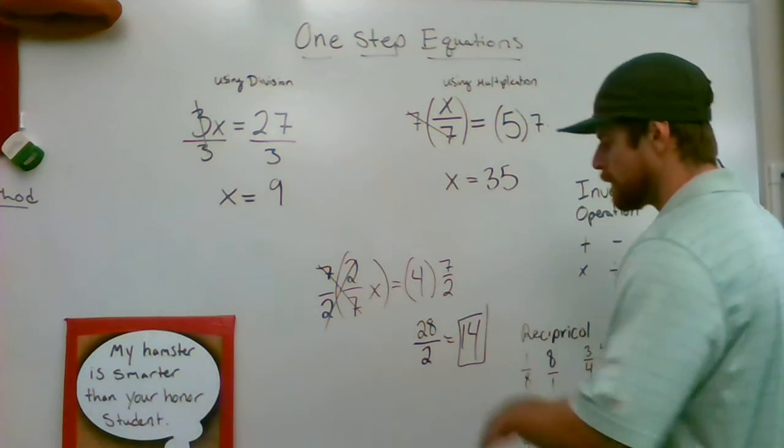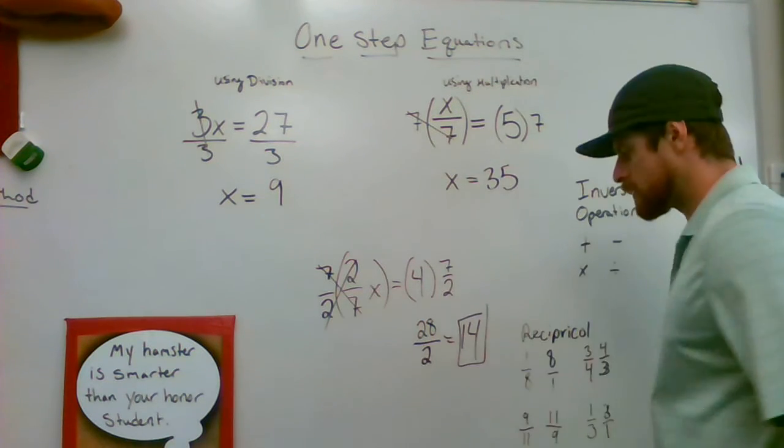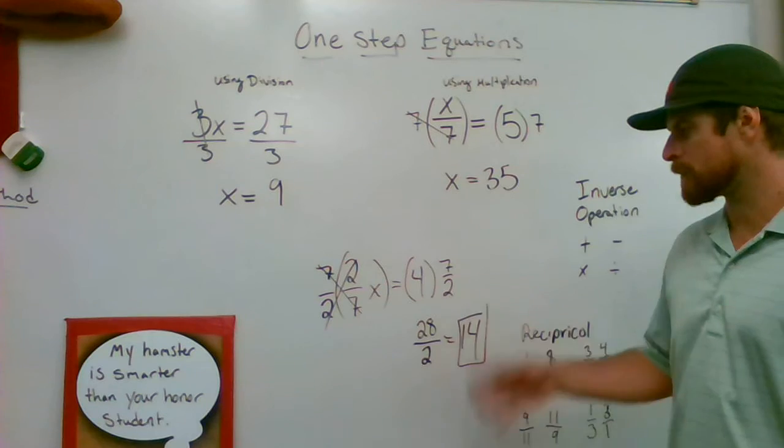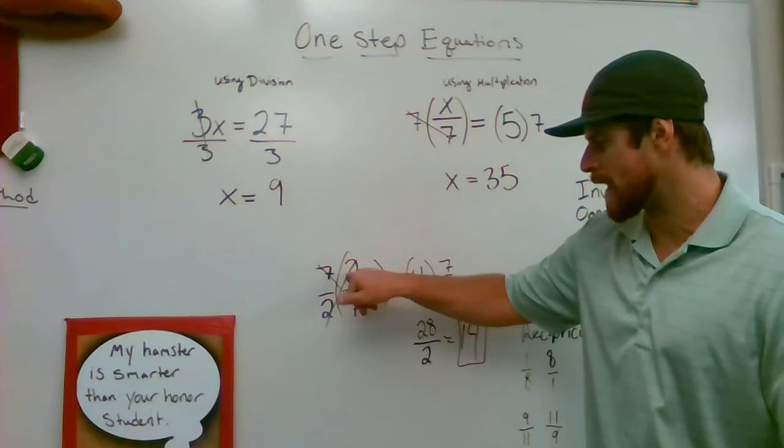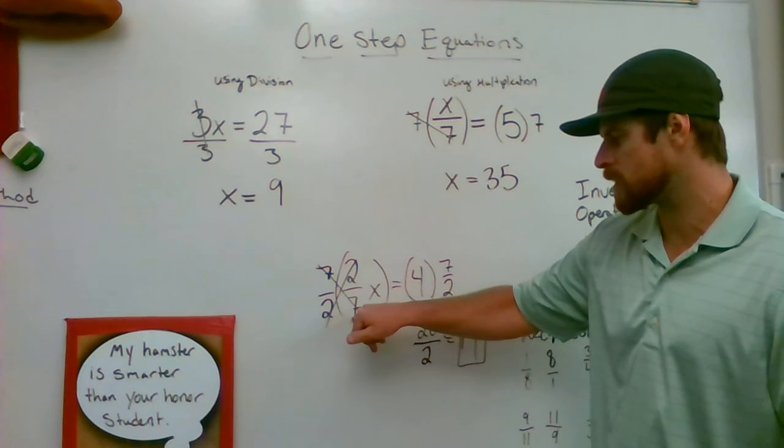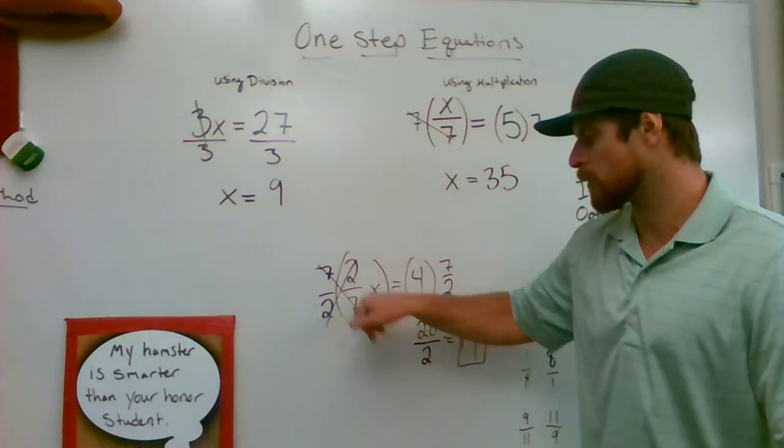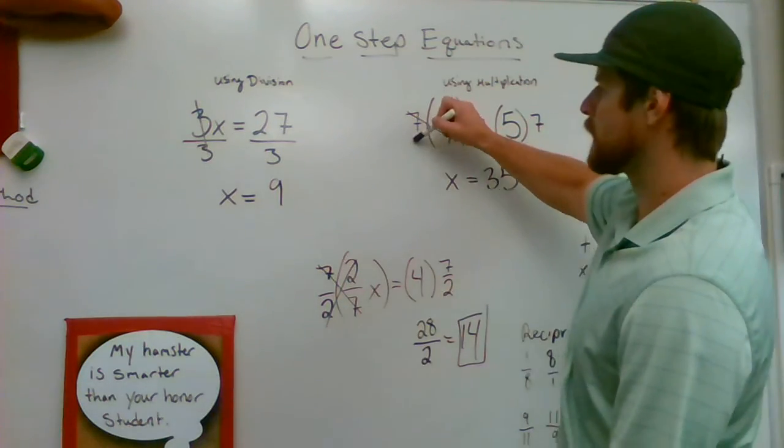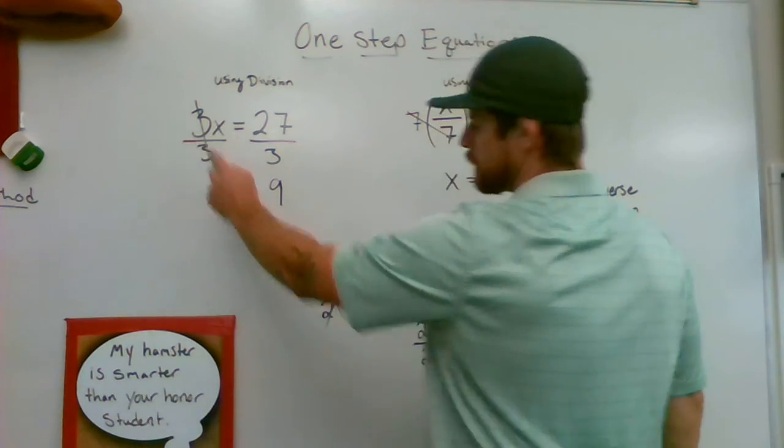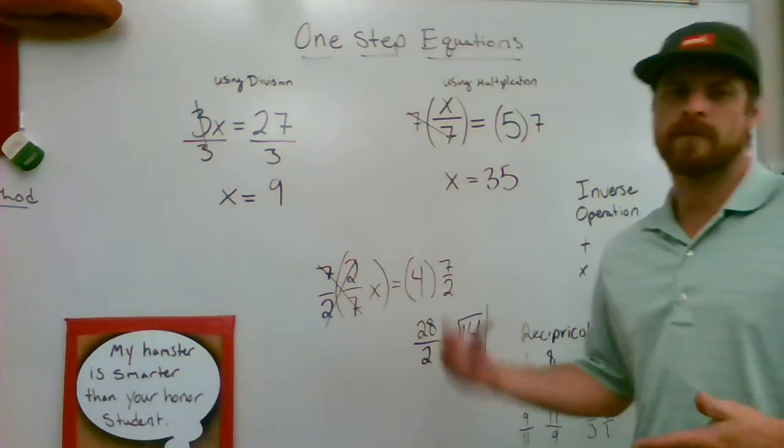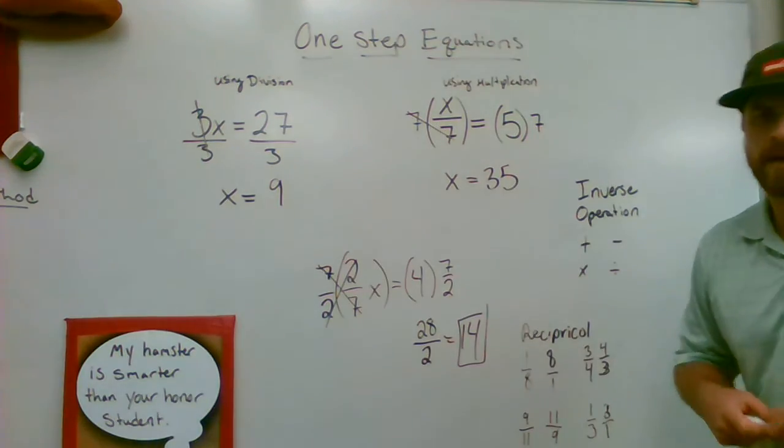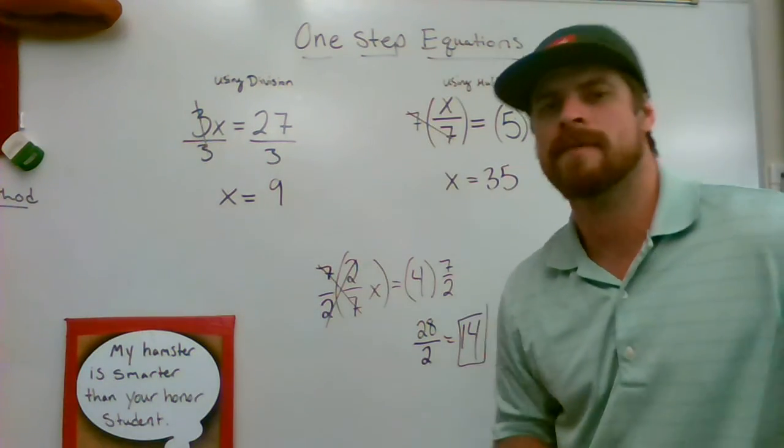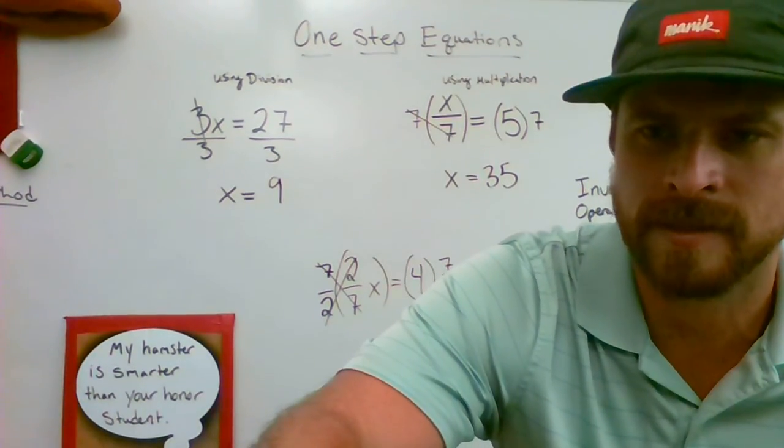Well, I hope that this helped. Multiplying by the reciprocal when you have a fraction attached to the variable, when the coefficient is a fraction, use your reciprocal and multiplication. When you see division, use multiplication. When you see multiplication, use division. Inverse operations. So one-step equations. You're going to be doing them a lot. So make sure that you have that skill dialed in. Y'all, good luck on your next test.